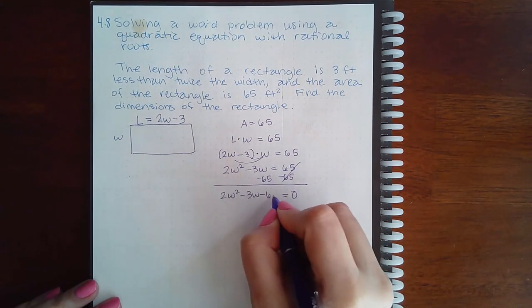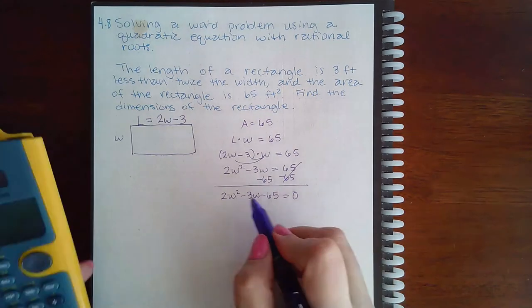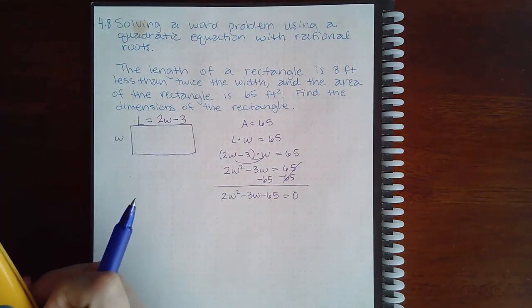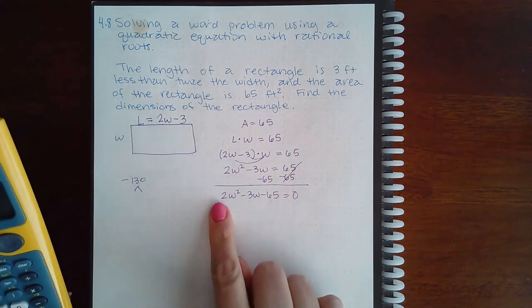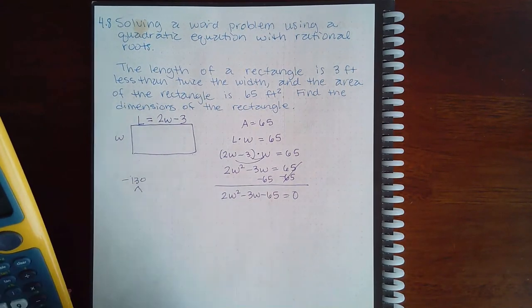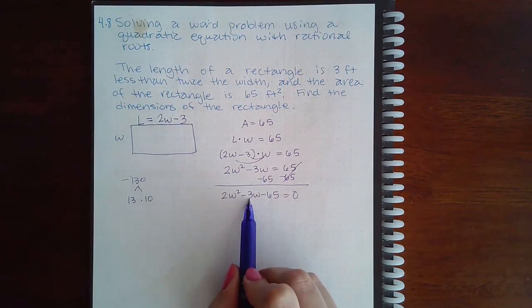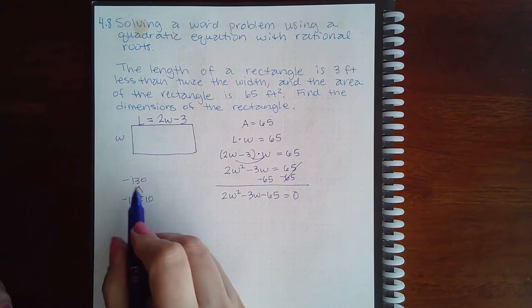I have to factor this, so I'm gonna go ahead and use my AC method. 2 times 65 is going to be negative 130 because a positive times a negative. I think 13 times 10 actually gives me 130, but the bigger number would have to be negative.